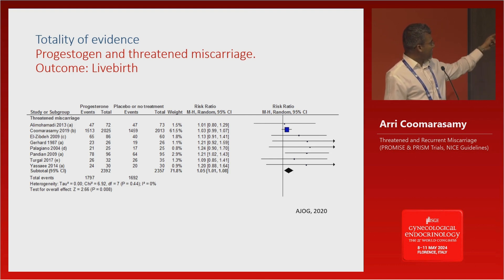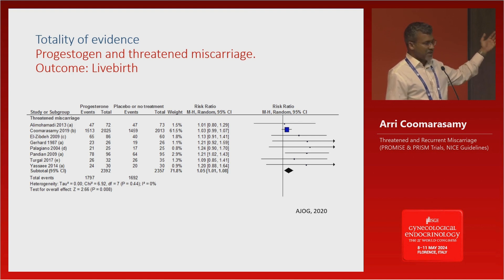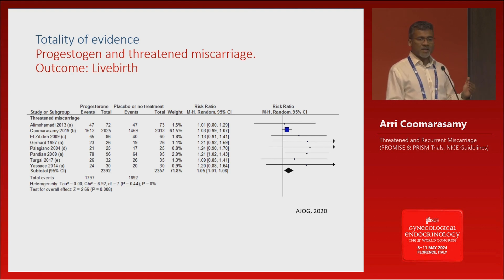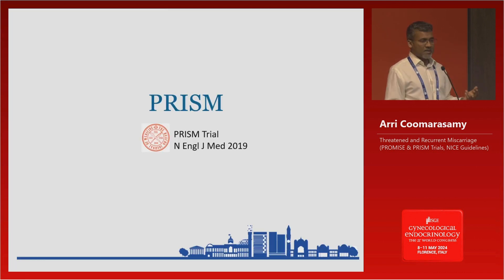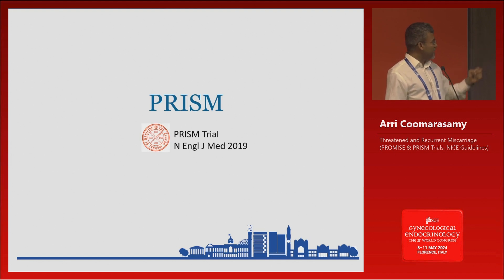The second study contributed some 4,000 patients out of the 5,000 data points available to look at the role of progesterone in this context. So we did a study called PRISM — progesterone in spontaneous miscarriage — published in the New England Journal in 2019.